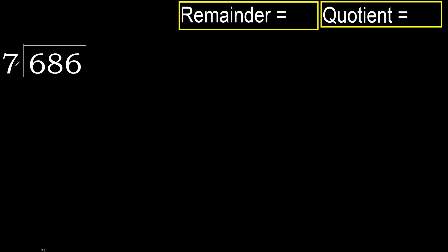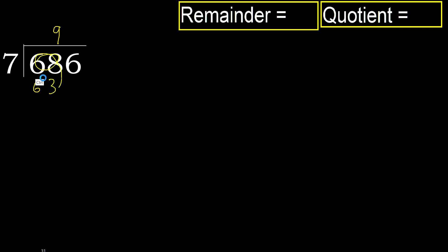686 divided by 7. 6 is less, therefore next. 68 is not less, therefore with 68. 7 multiplied by which number is nearest to 68 but not greater — 7 multiplied by 9 is 63, which is not greater. Subtract: 68 minus 63 is 5.